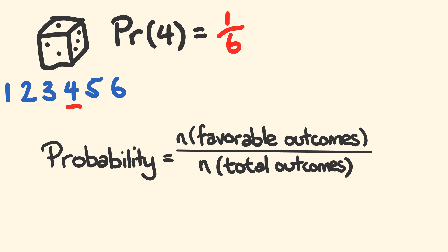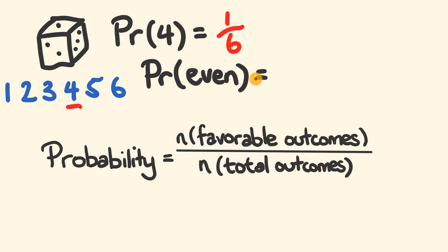What about a different one? What's the probability of rolling an even number? How many of these are even numbers? There's one, two, three of them — three favorable outcomes — and this is over a total of six outcomes.